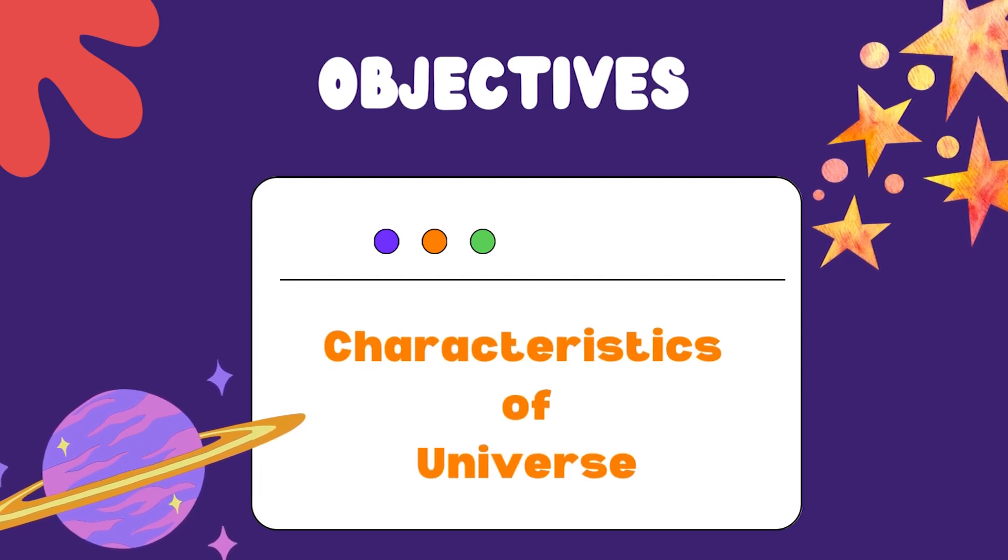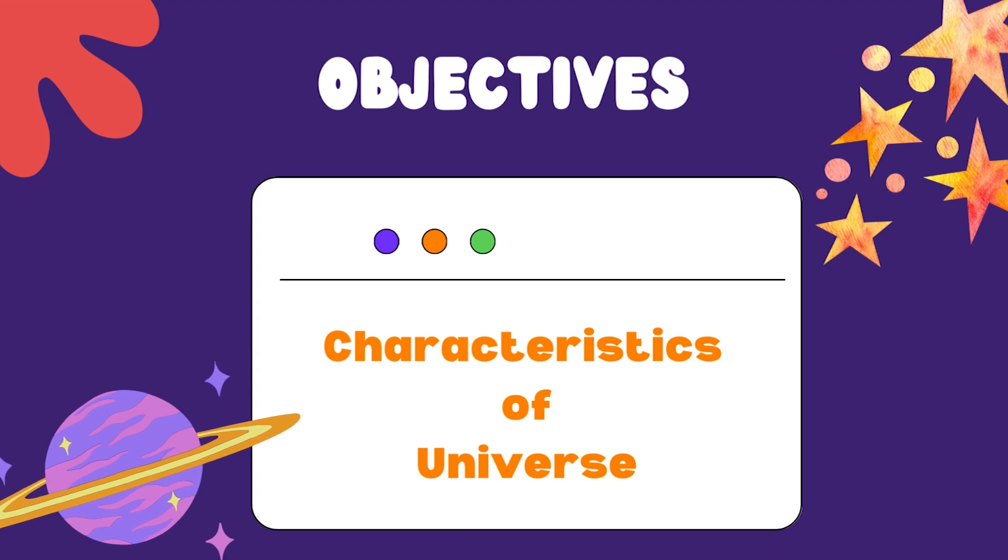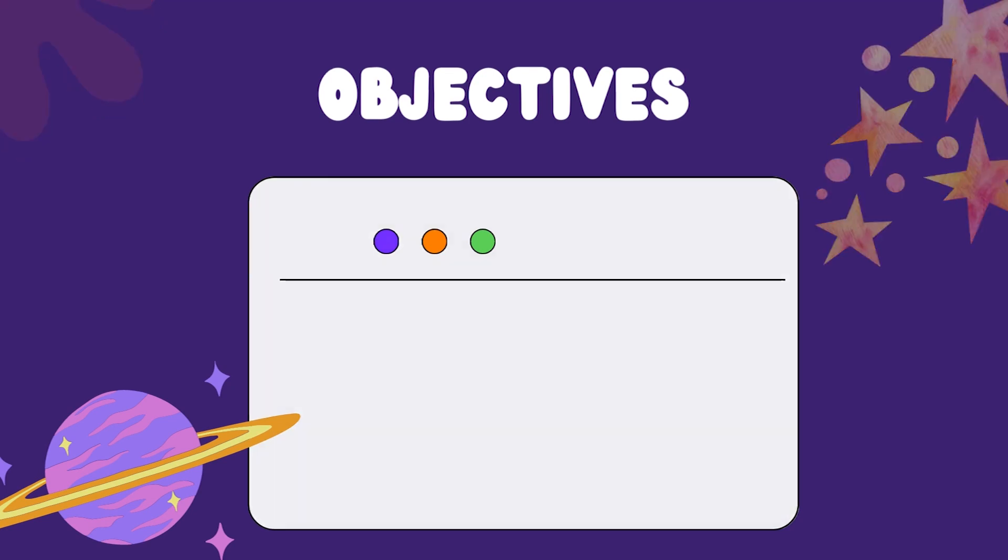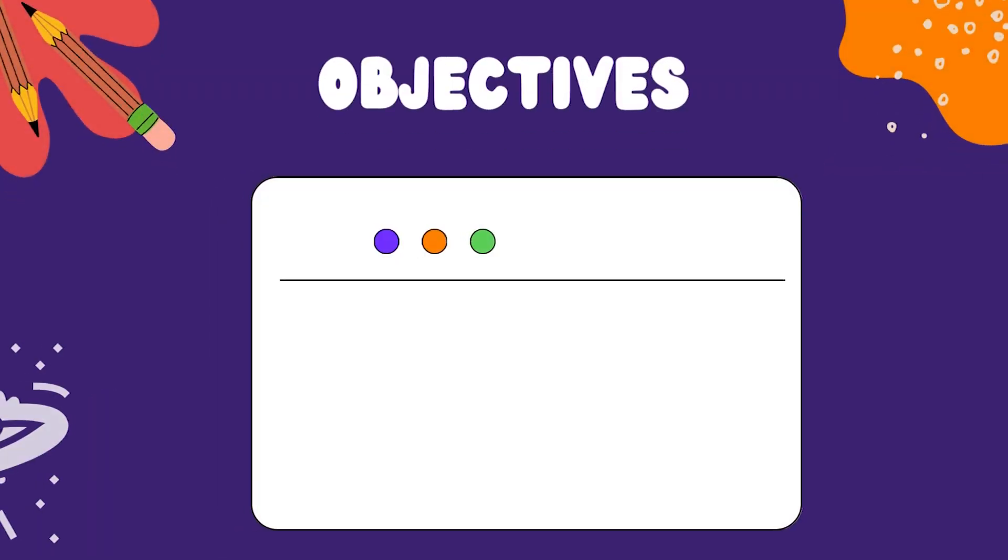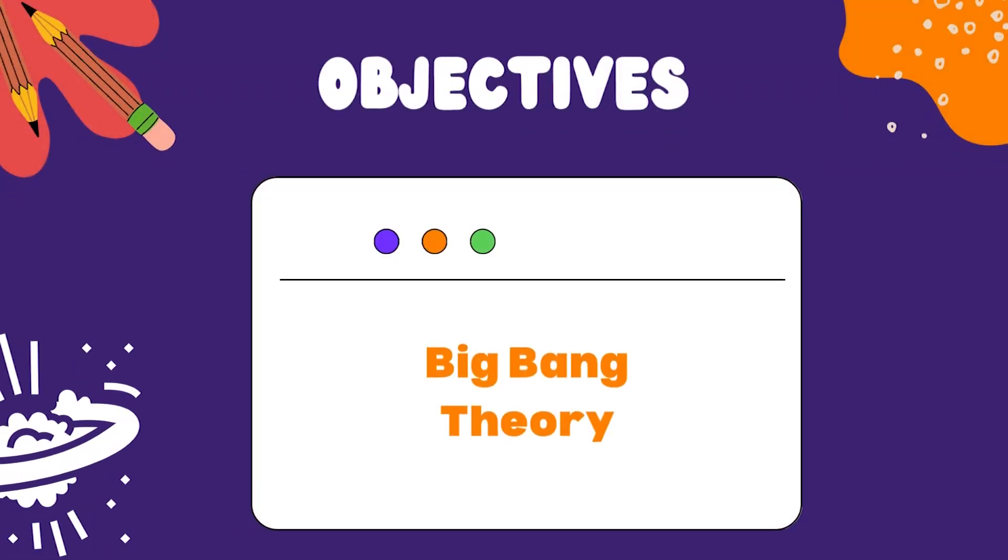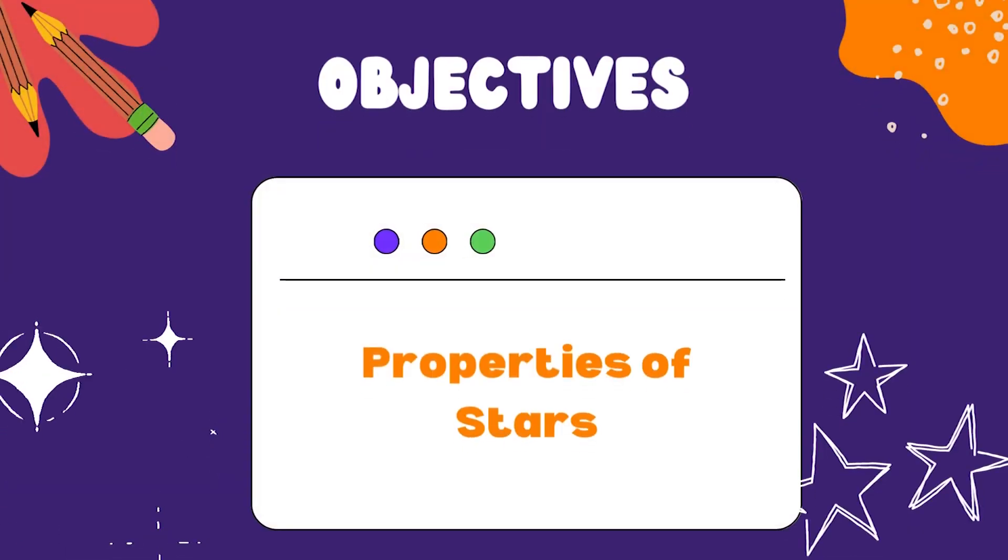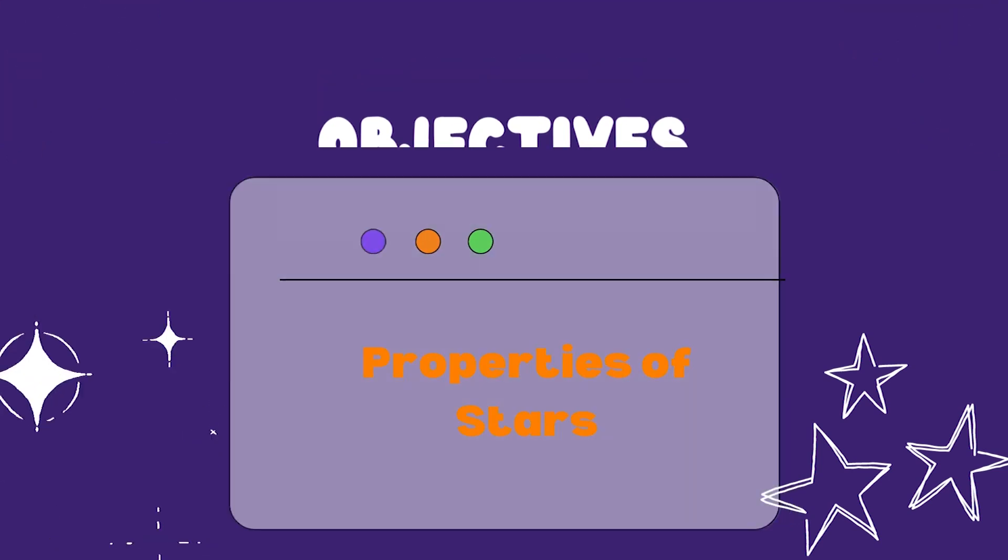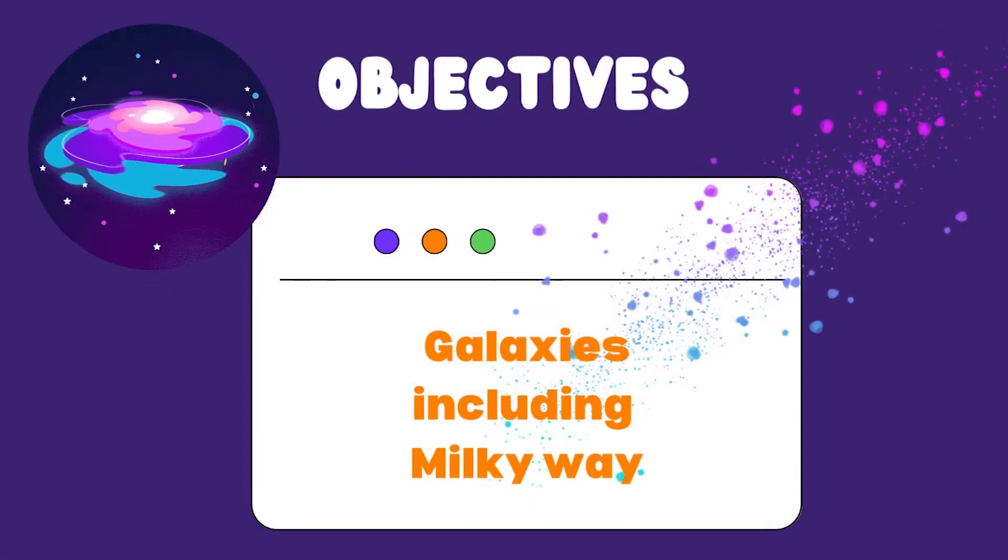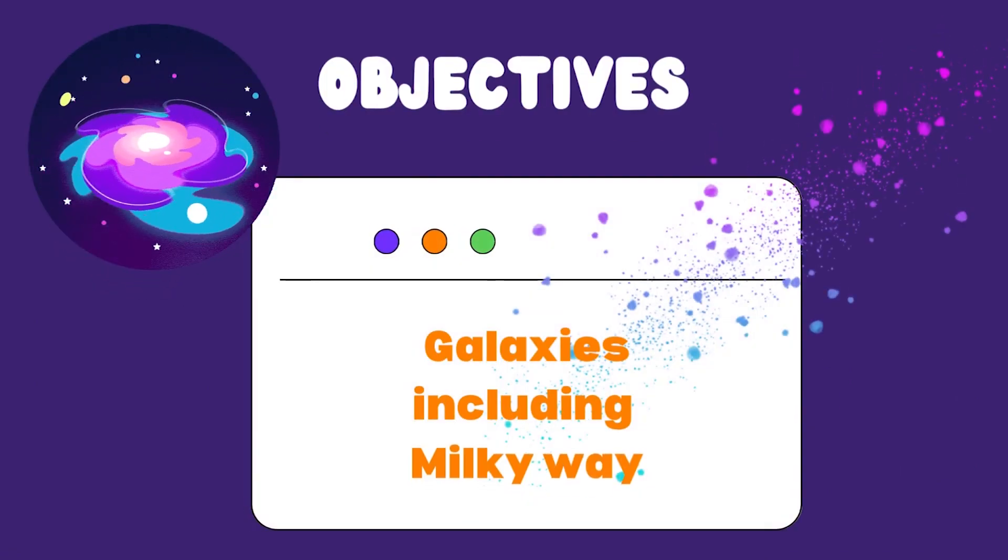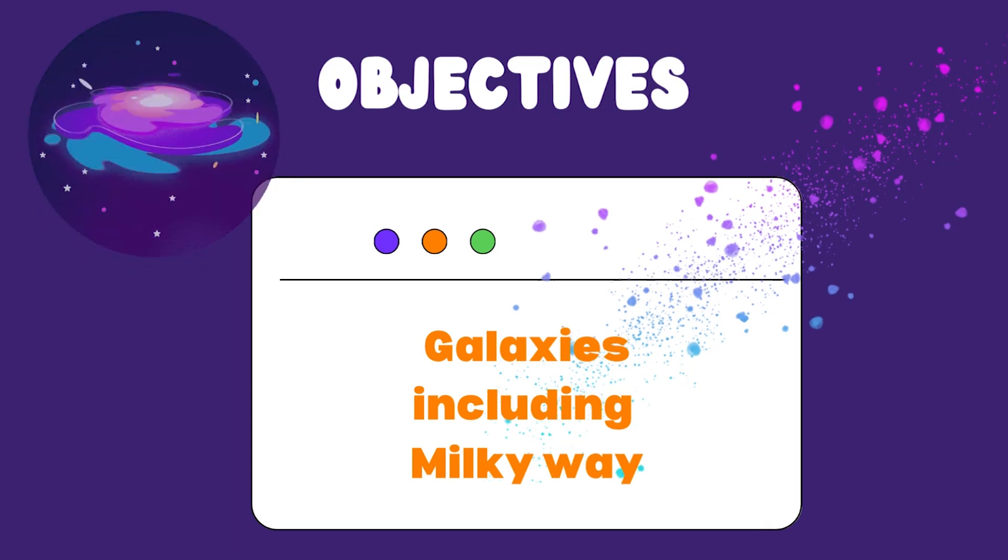First of all, with this topic, you will be able to define and describe the characteristics of the Universe, including its size, age and composition. Understand the Big Bang Theory and its implications for the evolution of the Universe. Describe the properties of stars, including their life cycle and the different types of stars that exist. Explain the formation and characteristics of galaxies, including the Milky Way.